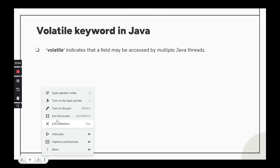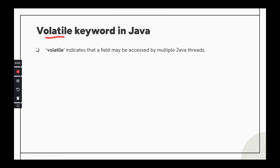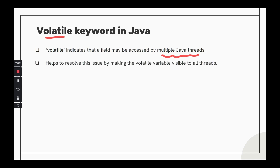Let's talk about the volatile keyword. Remember, it is applied on a variable, whereas synchronized keyword cannot be applied to a variable. It is a simple and lightweight mechanism that doesn't involve any heavy synchronization. It can be applied on a variable that can be accessed by multiple Java threads manipulating the same variable at the same time. The biggest problem that volatile keyword is trying to solve is the visibility problem. Suppose you have a boolean flag variable being accessed by multiple threads — T1, T2, T3 — and you want to ensure all threads simultaneously see any changes made to it.